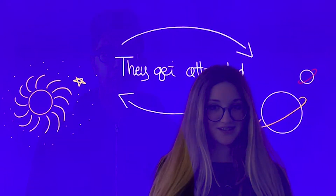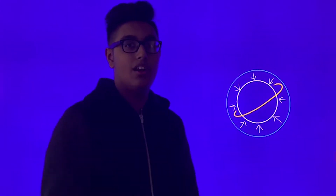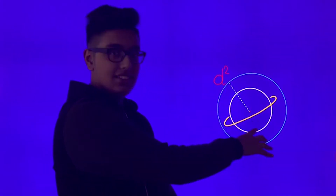Newton said that the forces which keep the planets in their orbs must be inversely as the squares of their distances from the center.